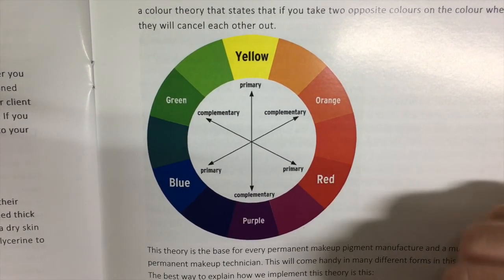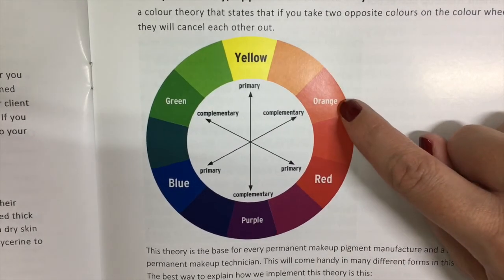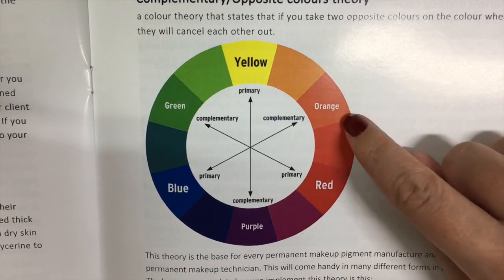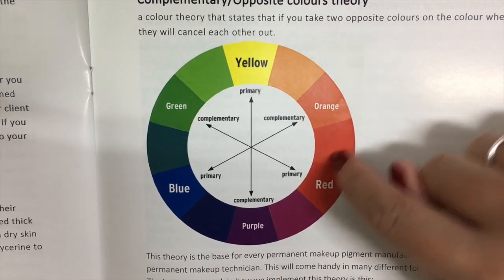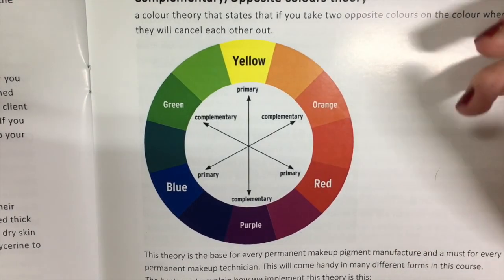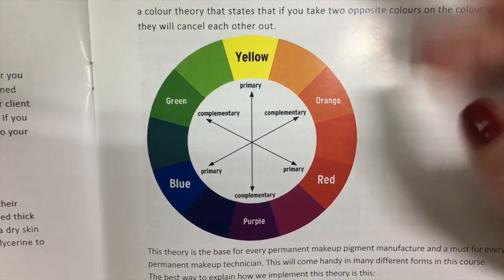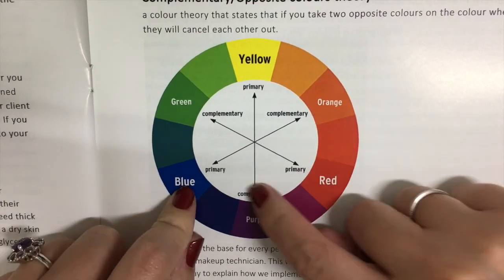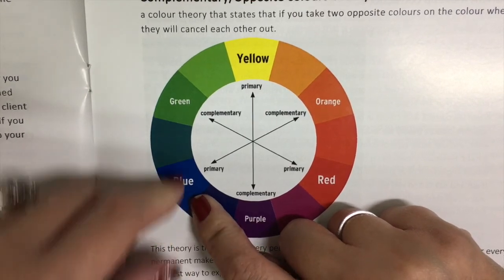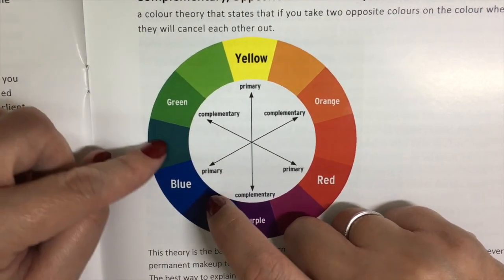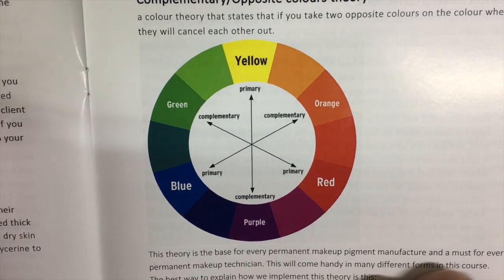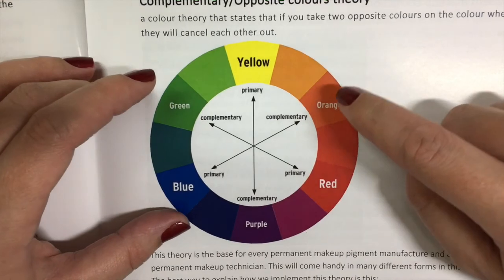In many cases, for example, you will see clients that have orange eyebrows. If you use a brown made from a lot of red pigment, you're just going to intensify the orange color in the eyebrows. Therefore, technically you should put a blue-base pigment — but we don't do blue on eyebrows — so we normally use green. We would use a green-base pigment to correct orange eyebrows.